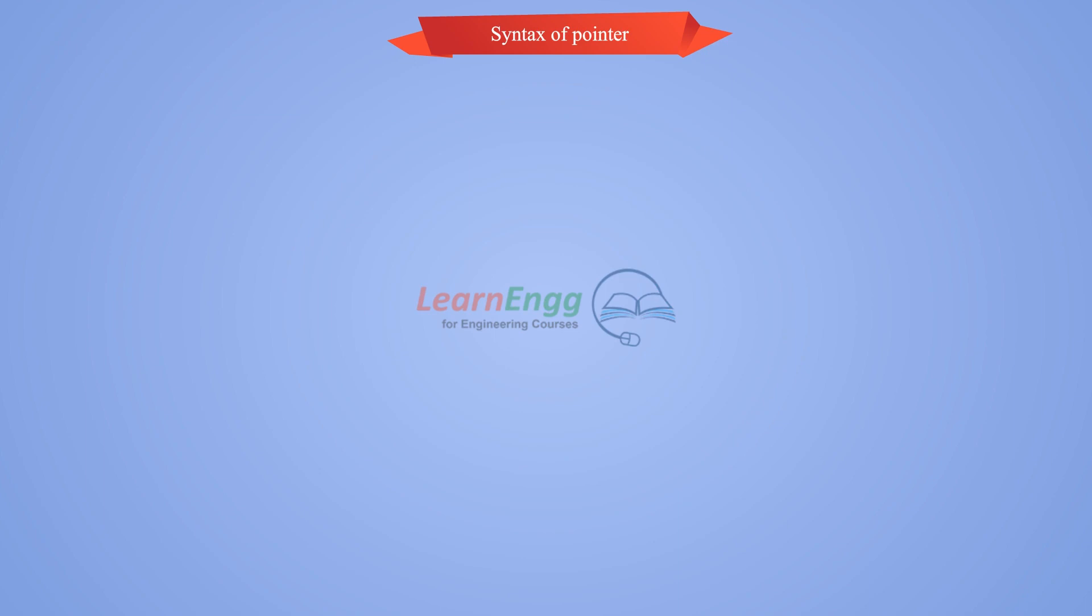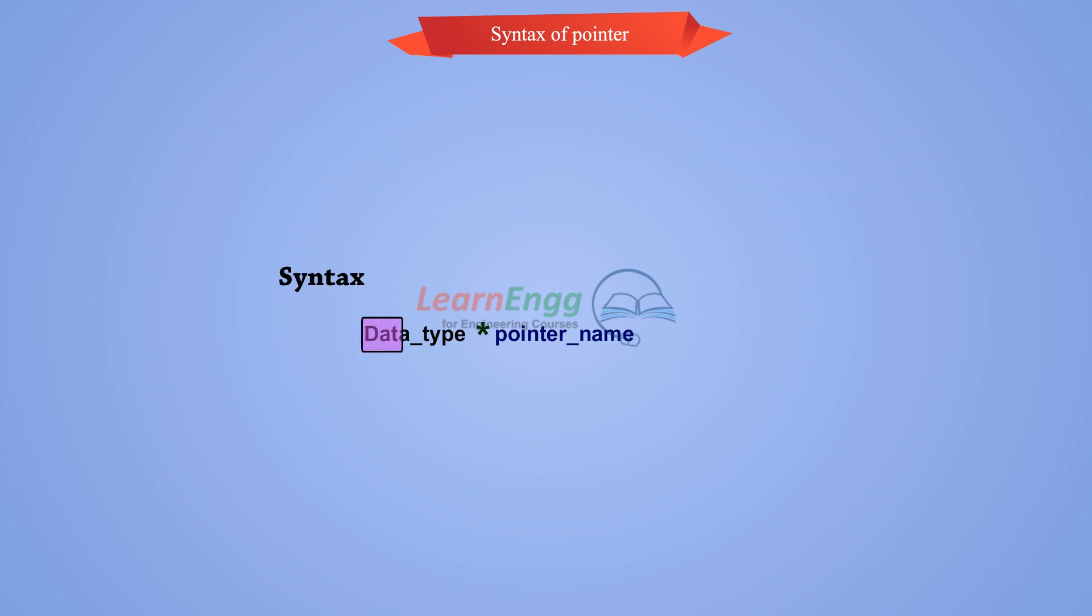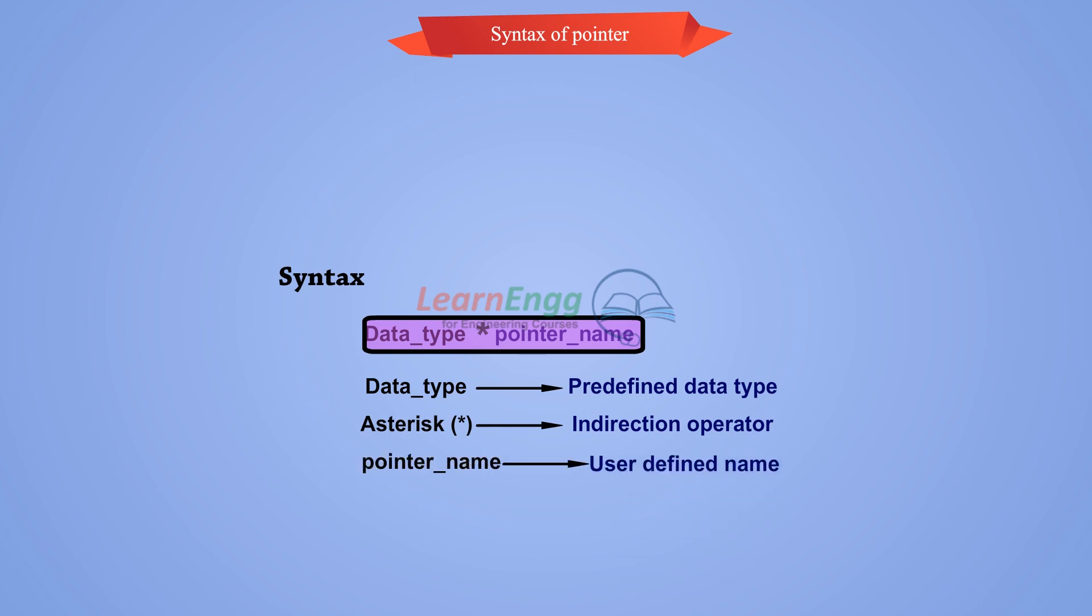Syntax of pointer: Declaration of pointer variable is similar to the declaration of normal variable. Data type asterisk pointer name, where data type is predefined data type like int, float, character, etc. Asterisk indirection operator is used along with pointer variable while dereferencing the pointer variable. Pointer name is user defined name.